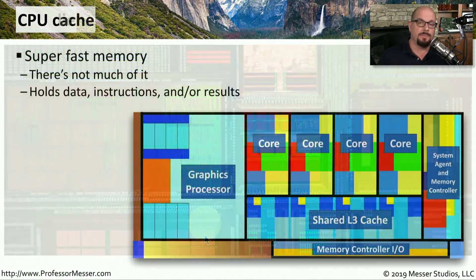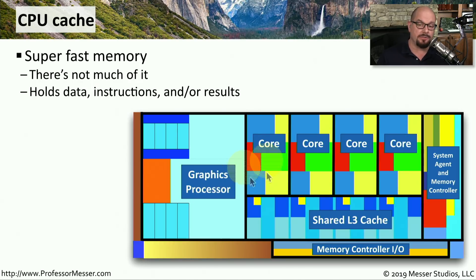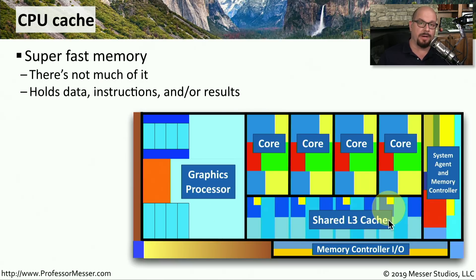Here's a block diagram of one of those CPU dies. Here are our four cores that are in this processor. This particular processor also has a graphics processor associated. There's a memory controller as well, and here's our level three cache memory that's in this particular CPU.